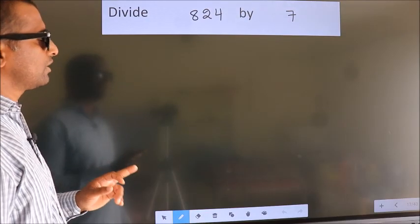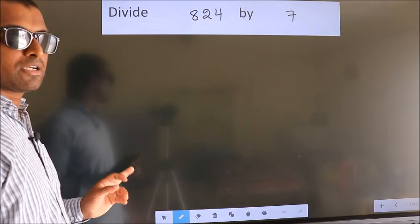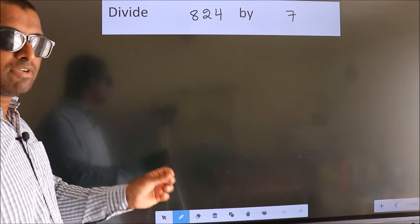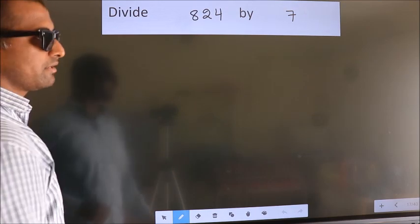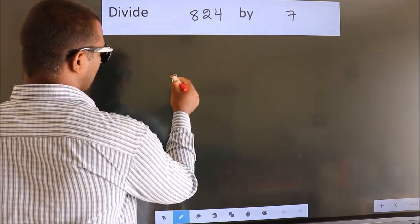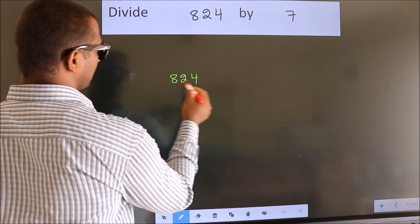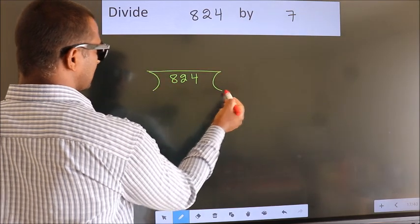Divide 824 by 7. To do this division, we should frame it in this way. 824 here, 7 here.